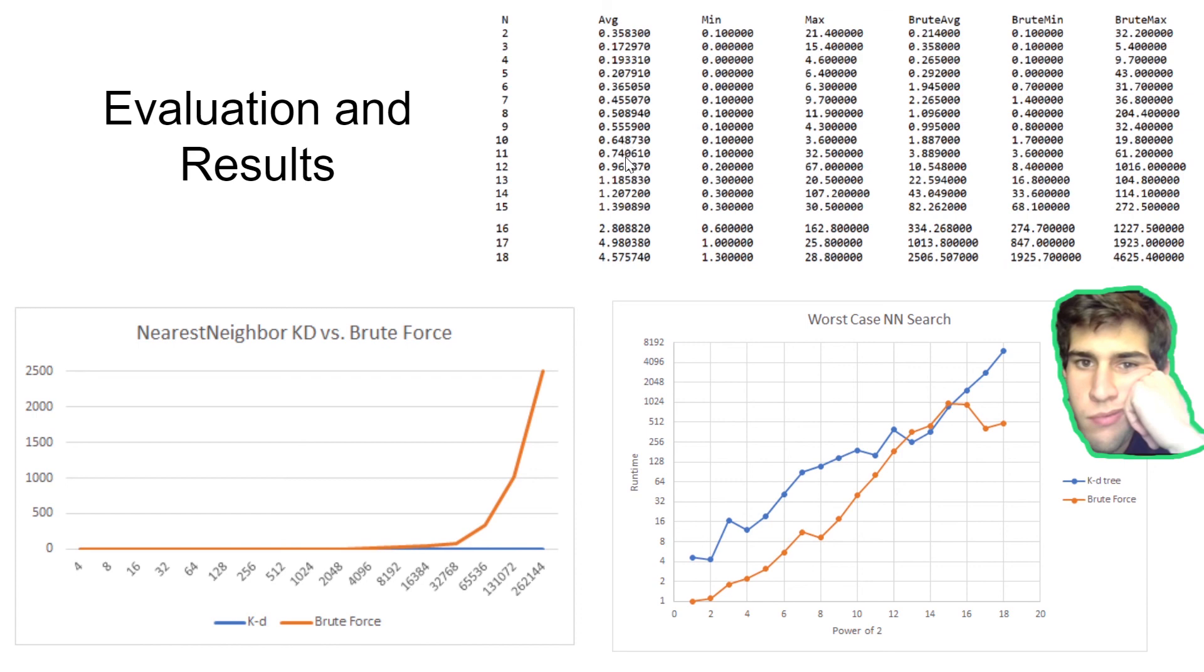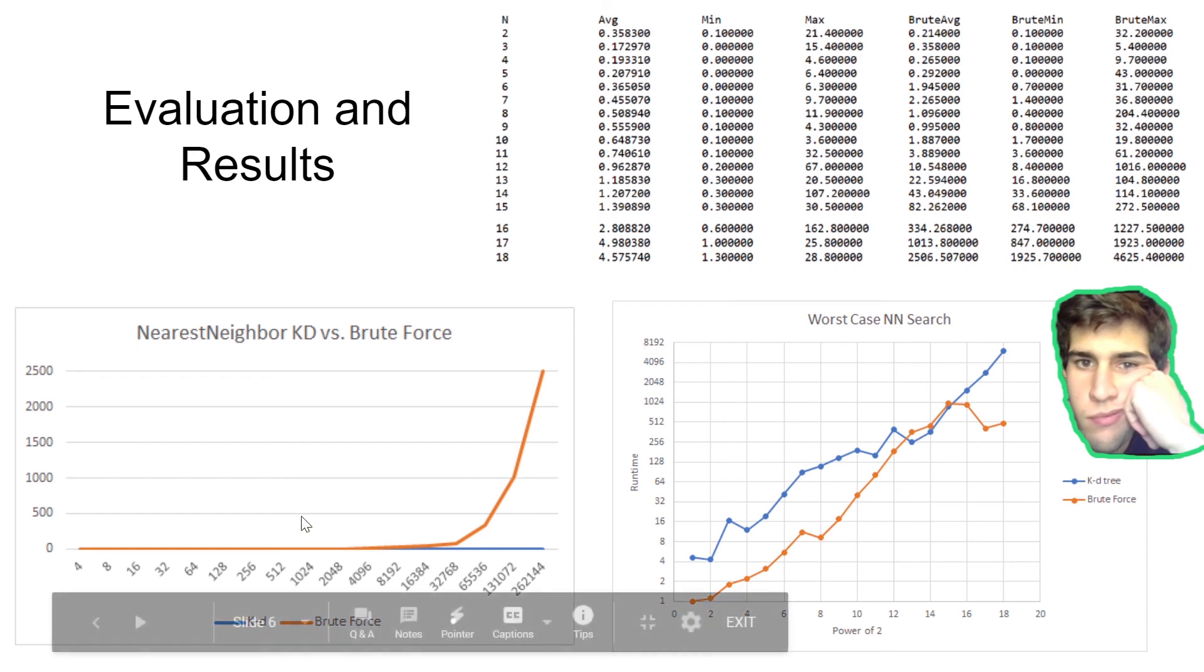As you can see, up to about 11, the brute force average actually kind of competes with it, and then it really pulls away after the dataset size of 2 to the 11th, and it starts getting a lot bigger, as you can see by this graph right here.